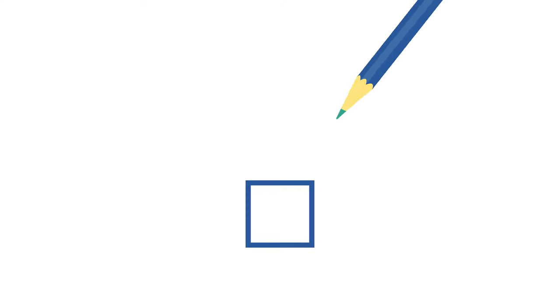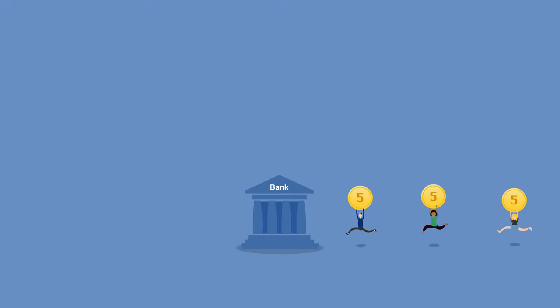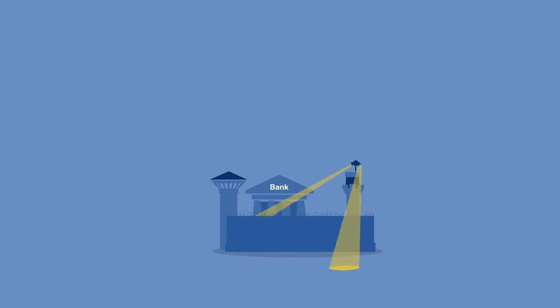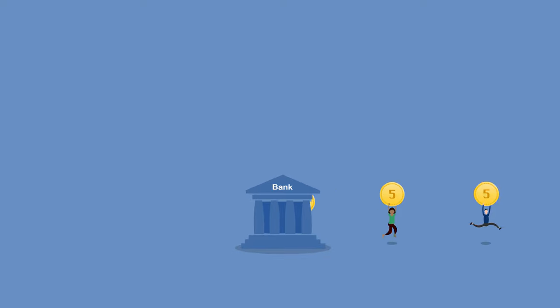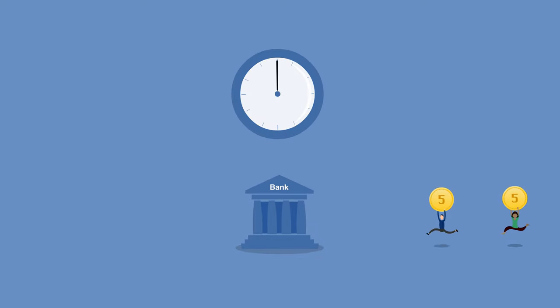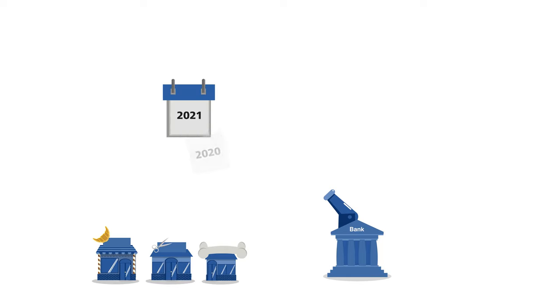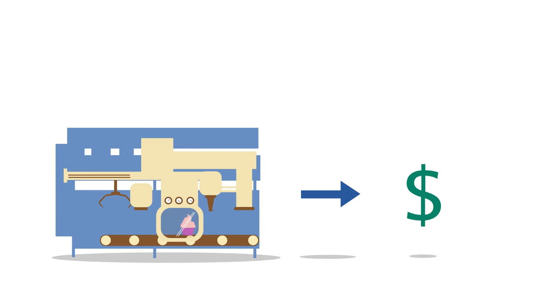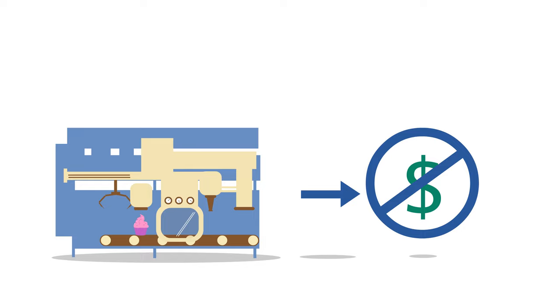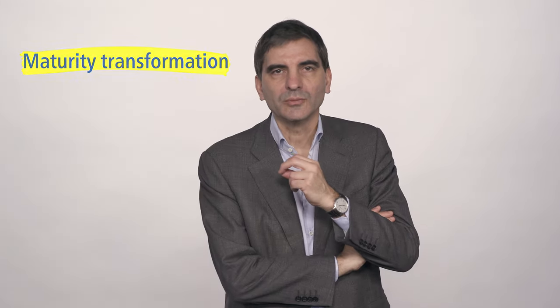How do banks work? Banks perform an important task for different members of society. Savers want to be sure their money is in a safe place and want to be able to withdraw it and use it to make payments at any time — they only want their money tied up for a very short term. Borrowers, by contrast, whether individuals or companies, want to borrow money for a longer period of time, as they invest in real estate or in machines that they can't sell at short notice. Banks use the deposits of many savers as a basis for loans to individuals or to companies. This practice of coordinating the different timeframes of borrowers and savers is called maturity transformation.